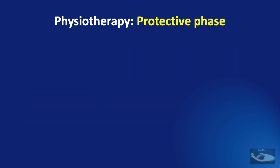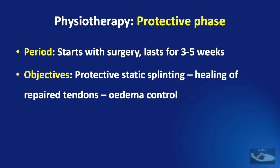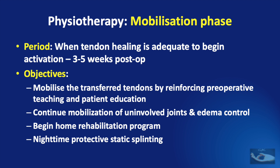Once the tendon transfer is done, the protective phase begins and lasts for 3 to 5 weeks. This protective static splinting helps in healing of the repaired tendons and also in edema control. Once 3 to 5 weeks are over after the tendon transfer procedure, the mobilization phase begins. The transferred tendons are mobilized by reinforcing pre-operative teaching and patient education. We also continue mobilization of uninvolved joints and edema control.